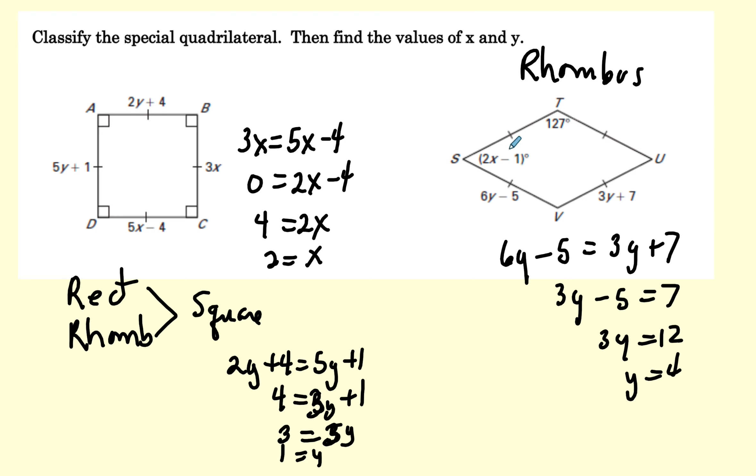Now I know that these two angles have to be supplementary. So I know this angle has to be 53 degrees because 127 and 53 will be 180. So I'll write 2X minus 1 equals 53. 2X equals 54, and therefore X equals 27.